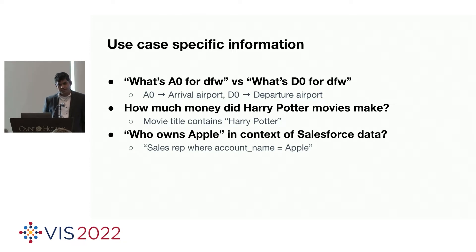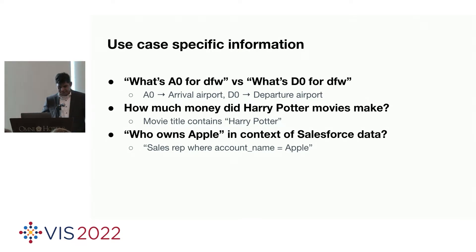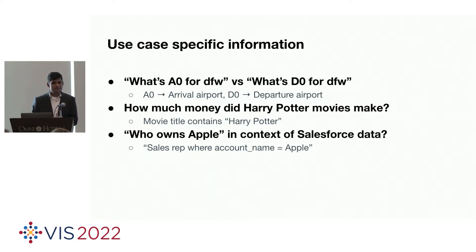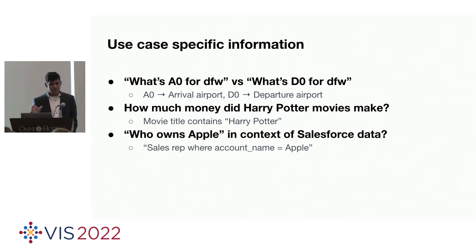In a movies dataset, when someone says 'how much money did Harry Potter movies make,' there's no class called 'Harry Potter movie' — what the user means is find every title that contains 'Harry Potter' in it. That's a big leap in reasoning: this constraint is actually a string contains constraint. Or 'who owns Apple' in a Salesforce context means who's the sales representative responsible for Apple. This information isn't missing from public NLP training data incidentally — it's locked inside individual organizations in the heads of specific people who aren't going to provide thousands of training samples.